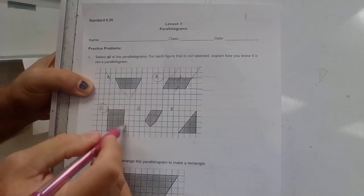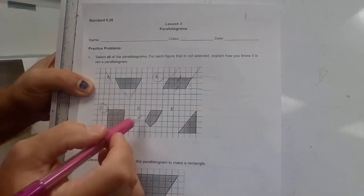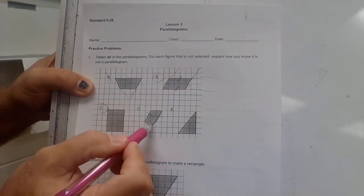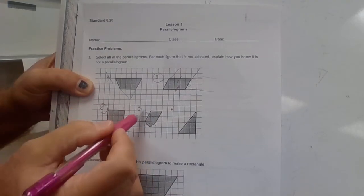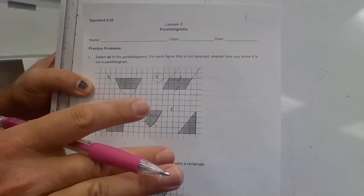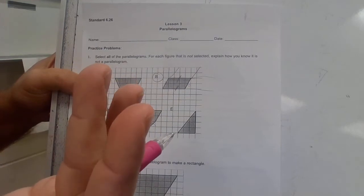Now let's look at this one: one, two, three, four, five-sided shape. By definition, it's not a four-sided shape, so by default it's not a parallelogram.